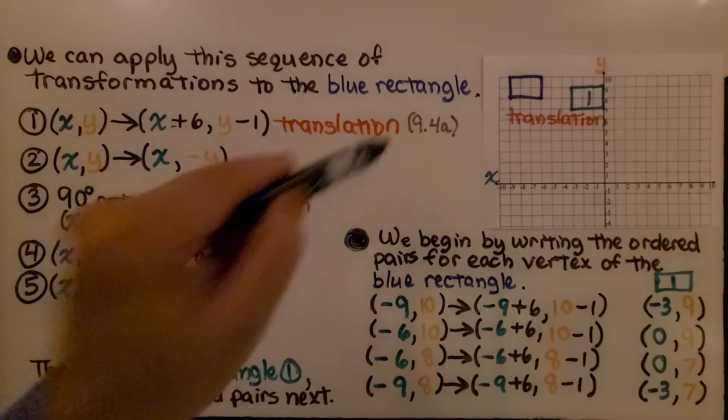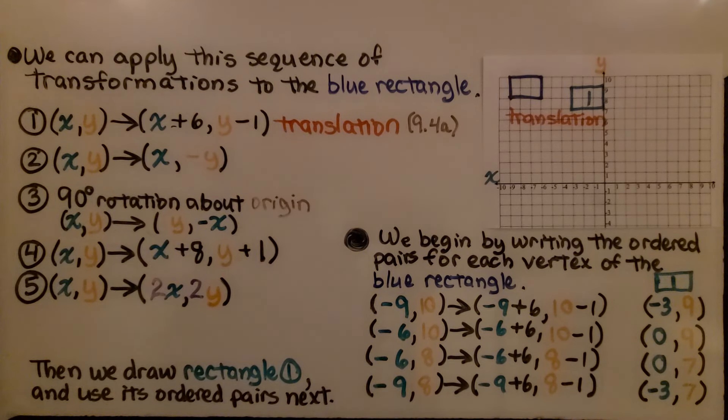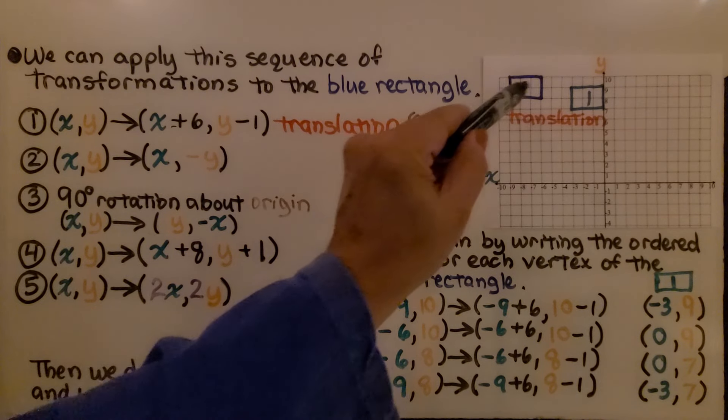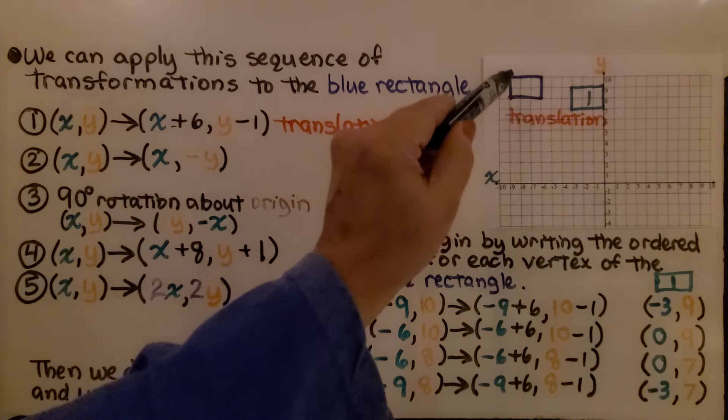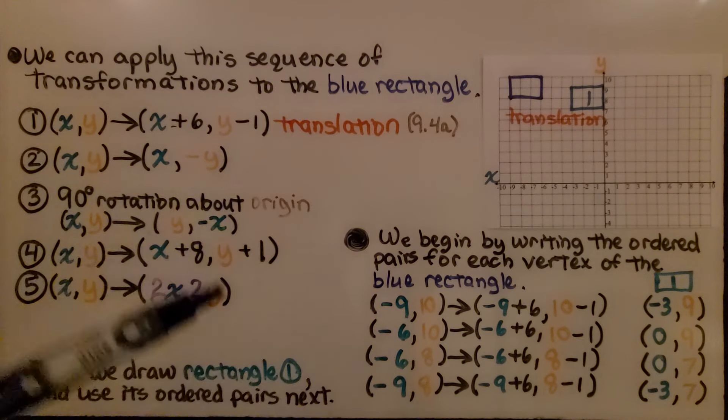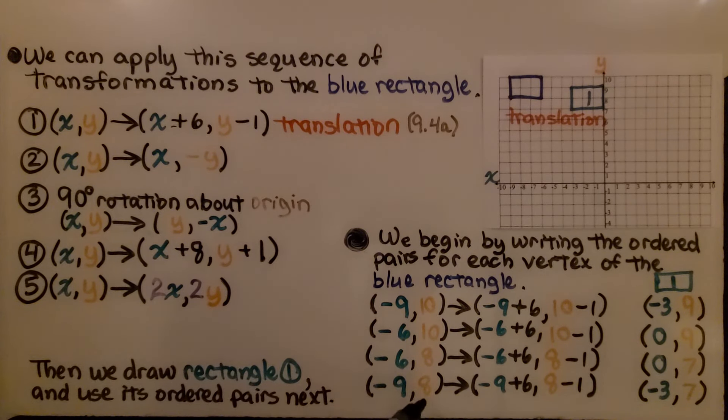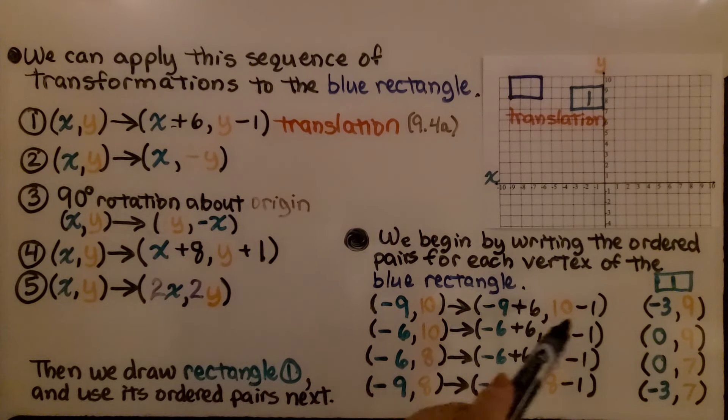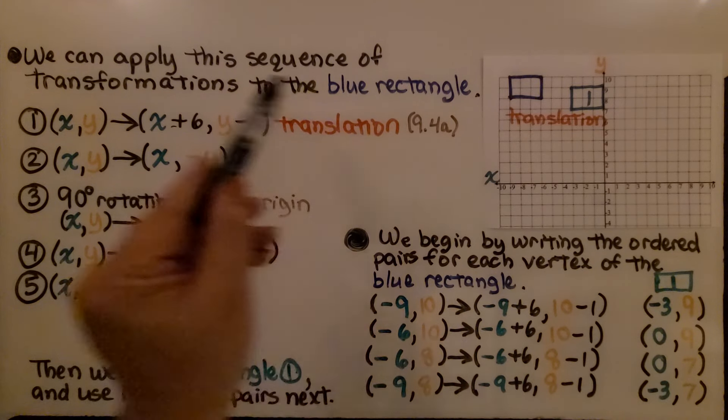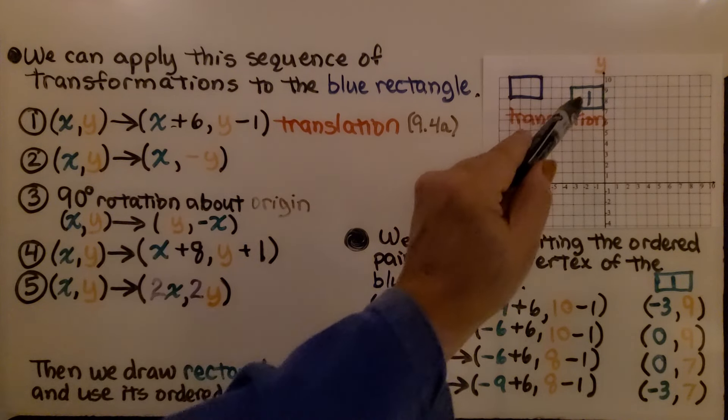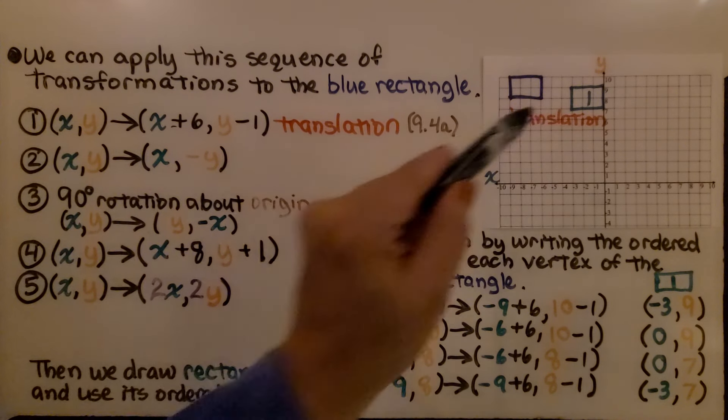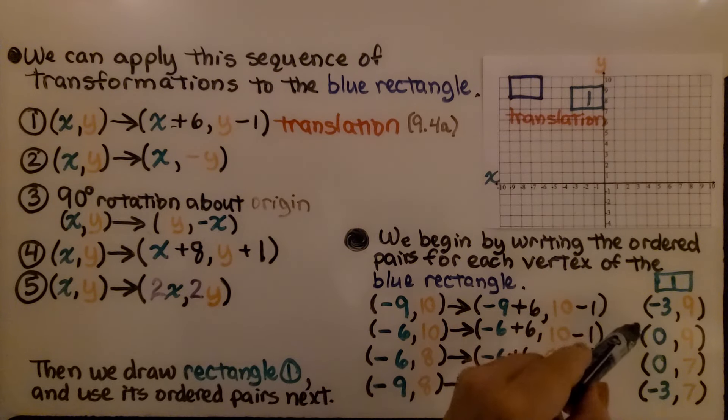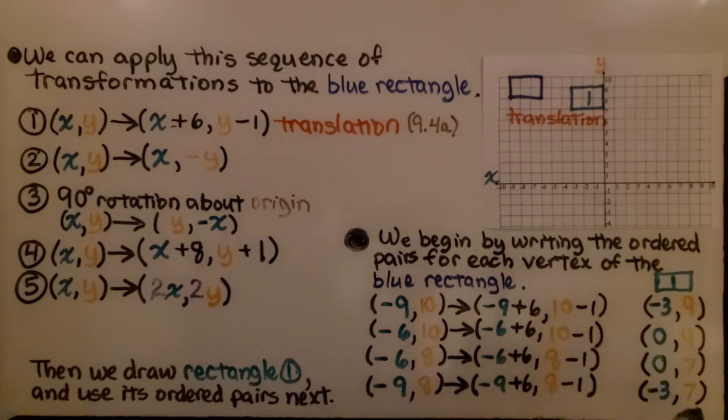Now if you're not familiar with this, I'm going to have a link to 9.4a, where we learned about translations, in the description. So we mark down all of the ordered pairs for the vertices for this blue rectangle, and we apply the plus 6 minus 1 to the x and y values, and we know that we are going to plot this translation to here as our number 1, as our first transformation. These are the ordered pairs we draw it.